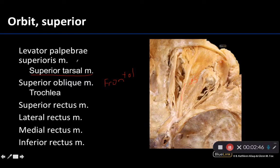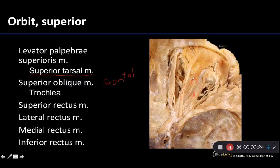The levator palpebrae superioris muscle is going to be just directly underneath the frontal nerve. You can see a little division right here — this is levator palpebrae superioris — and just deep to or just underneath the levator palpebrae superioris is the superior rectus. This is an important thing to note: when looking at this view without any muscles reflected, it's not the superior rectus that's the most superior thing, it's the levator palpebrae superioris. We'll see a view of this in a moment where we've reflected the levator.